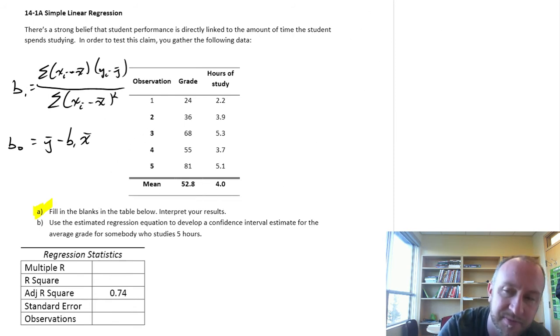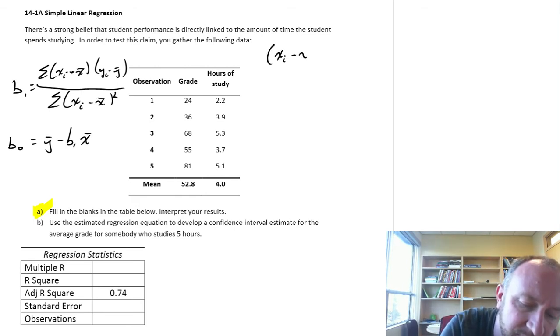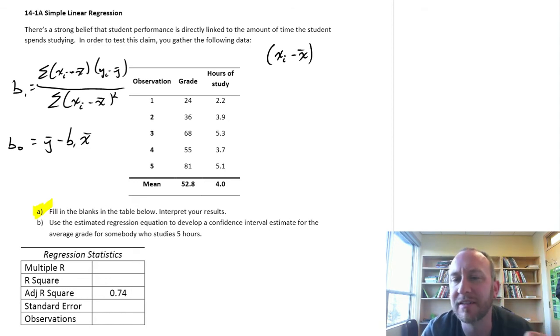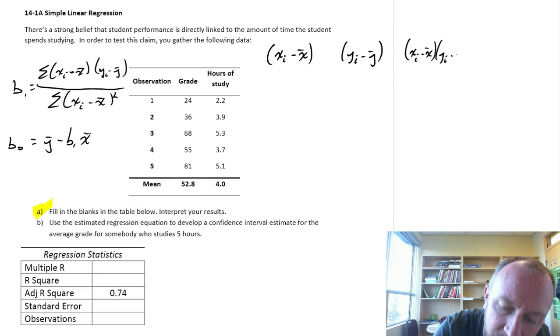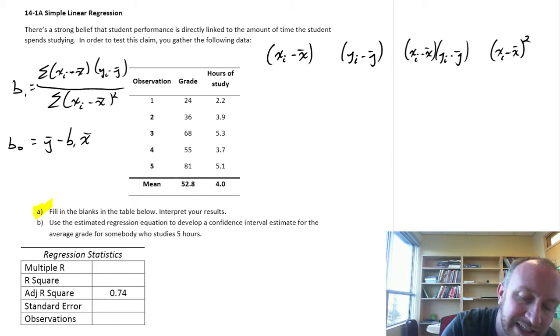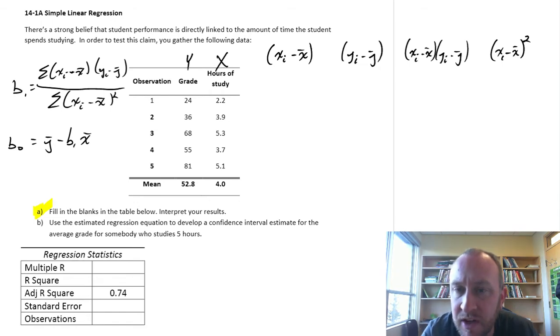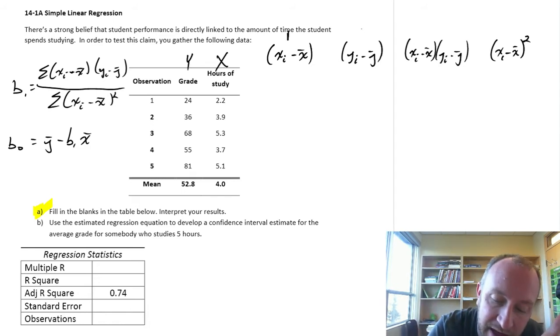So I'm going to clear some space, and we'll go through these calculations. And I'm going to cheat a little bit. You'll see what I mean. I'll go through a little bit faster than normal. So what I like to do is calculate each of the parts of this formula separately. So we're going to need those differences between x and x-bar. We'll need the differences between y and y-bar. Then we need the product of those. And then we need the first column, or those differences between x and x-bar squared.